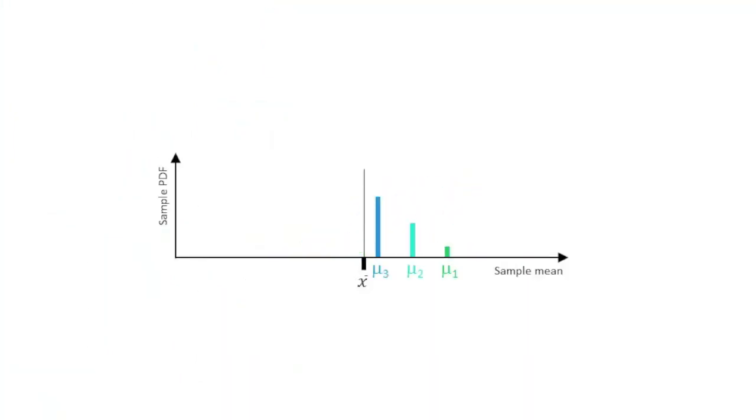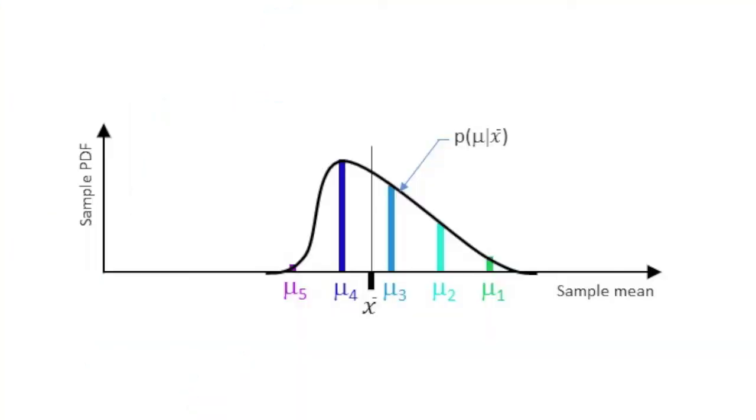These curves would correspond to the colored curves in this image. Finally, what shape would the probability density function have that relates population means to sample mean? That curve corresponds to this black curve in this image.